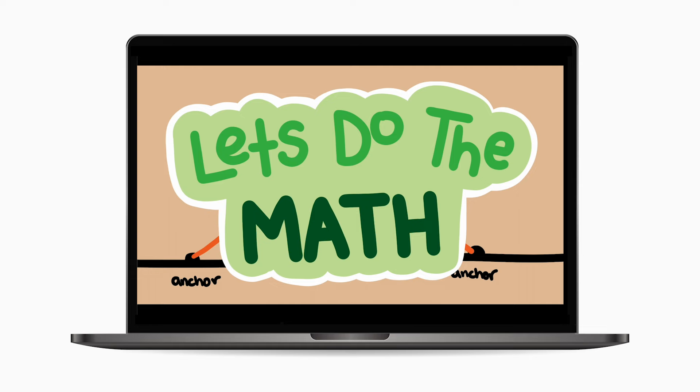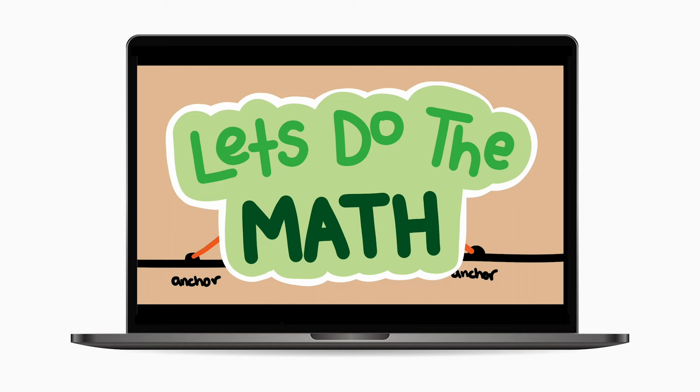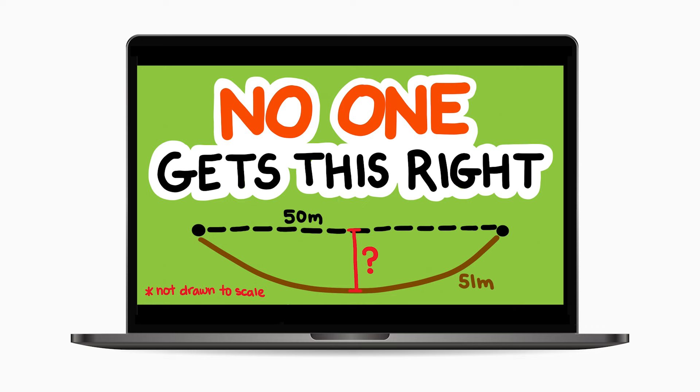In this video, we will do the math to demonstrate why this matters and show you what a secure load looks like. We'll be using some things we've learned about arc length in our previous videos on sagging ropes and basketball fast breaks.